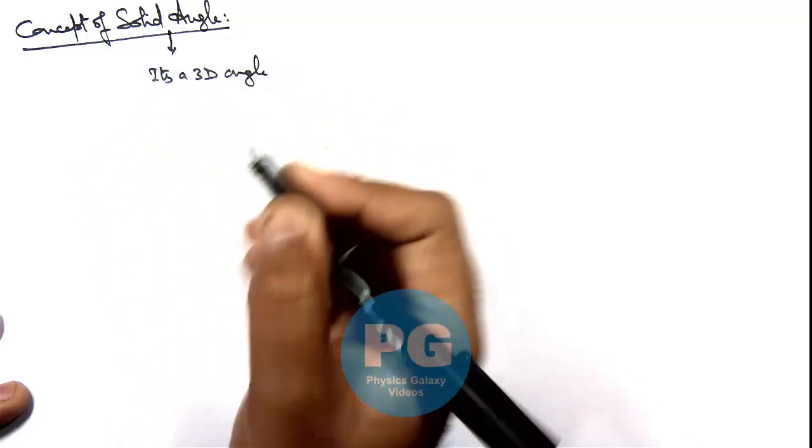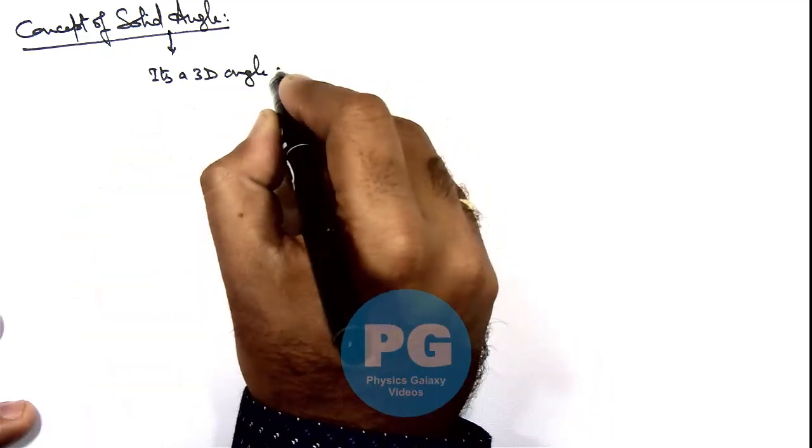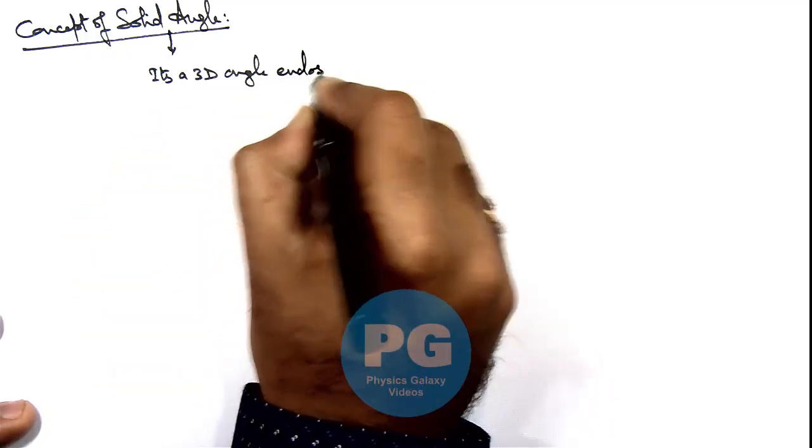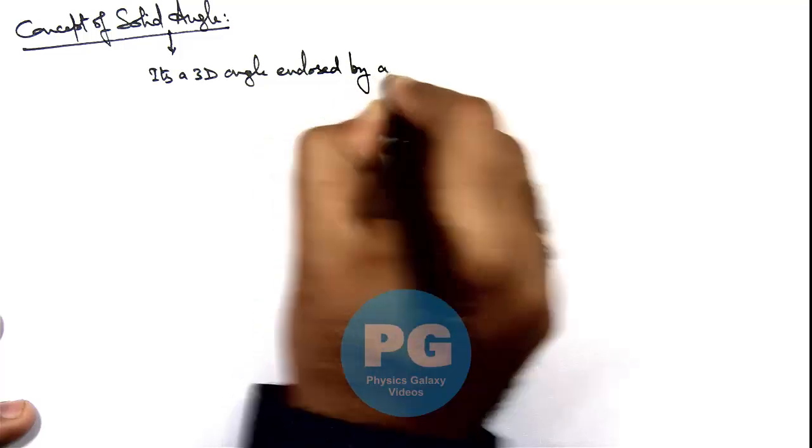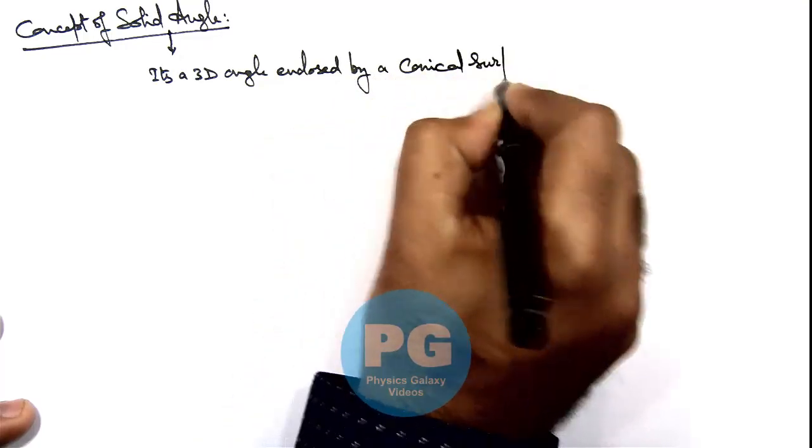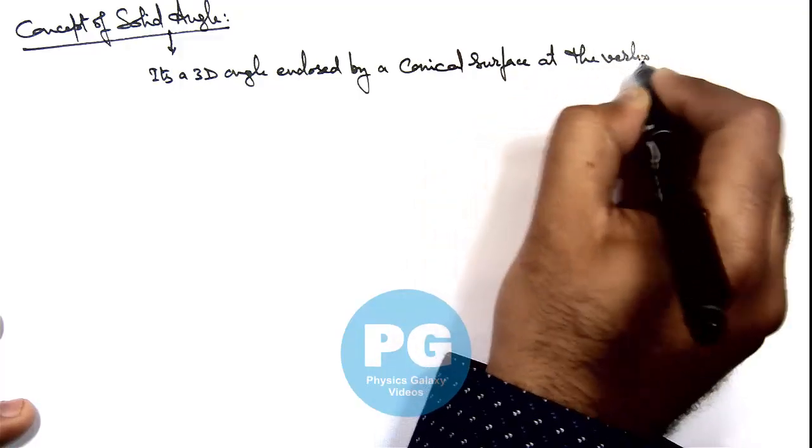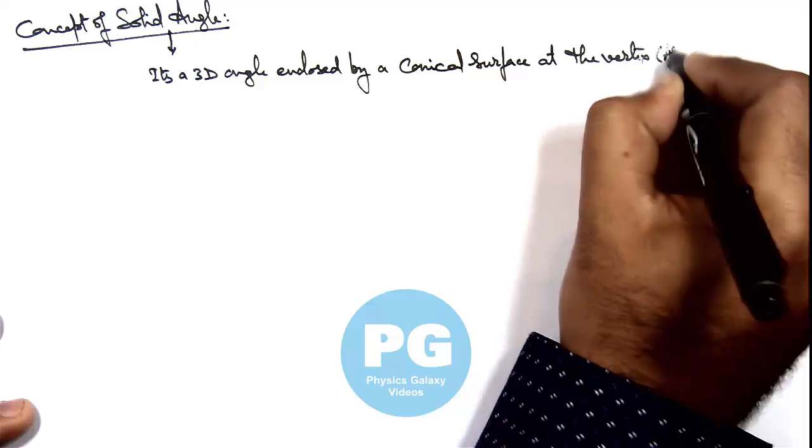I am just writing down the basic definition then I'll explain what exactly it is. It is a 3D angle enclosed by a conical surface at the vertex, or we also call apex of the surface.